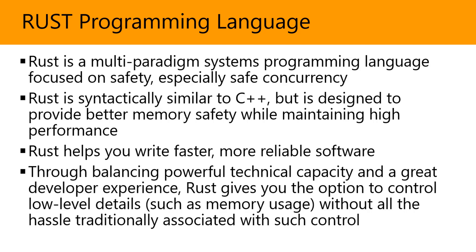Rust helps programmers write faster, more reliable software. That's why AWS, when developing Firecracker before making it open source, selected the Rust programming language. And according to AWS, it gave them very few errors or bugs when developing Firecracker.